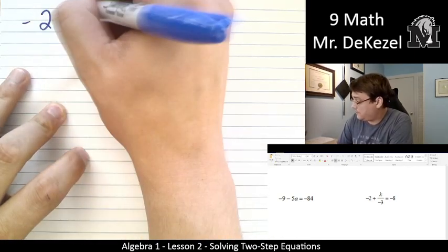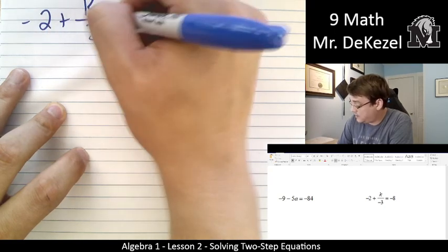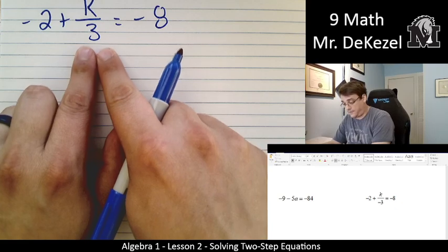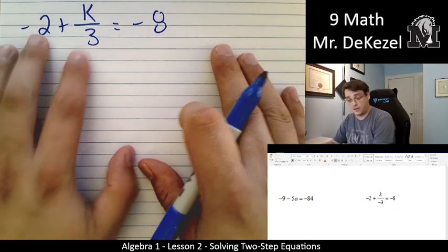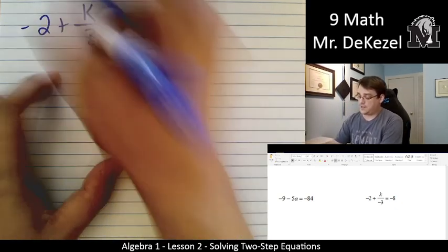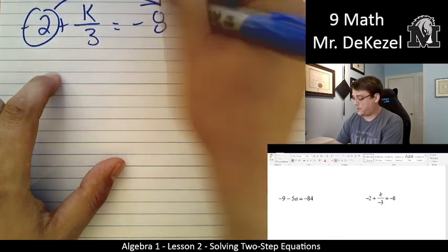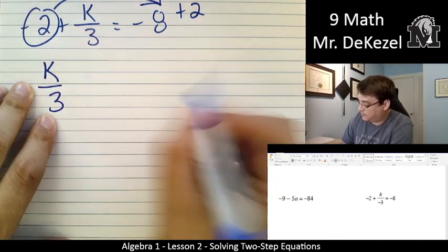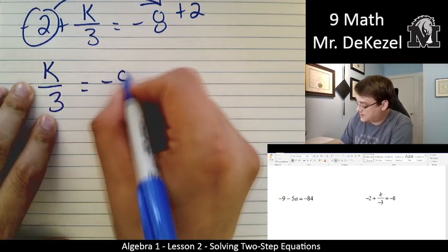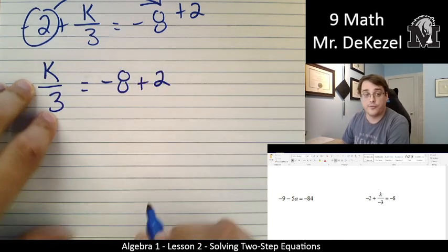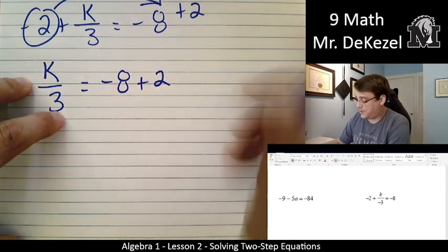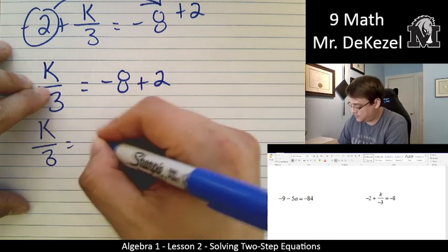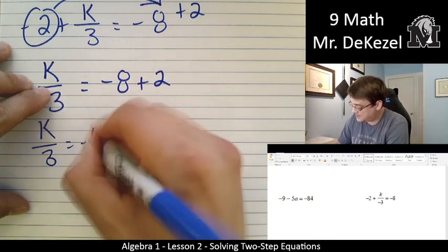Let's do another one. Minus 2 plus k divided by 3 equals minus 8. We're going to get the term with the variable by itself first. So that's right here. We're going to move this over. It's subtracted on this side. We are going to add it to the other side. So we're left with k divided by 3 is equal to minus 8 plus 2. Minus 8 plus 2, that is minus 6.